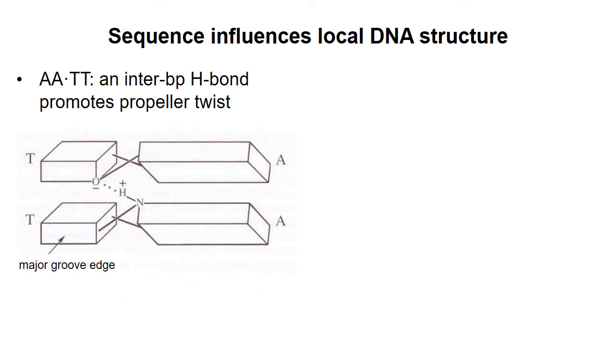The specific sequence of a dinucleotide can influence how much propeller twist happens. For example, in the AATT dinucleotide, it is possible for a hydrogen bond to form between adenine of one base pair and the thymine of the next base pair. This hydrogen bond is made stronger if propeller twist is larger than usual, so you will generally see more propeller twist in AATT dinucleotides than in other combinations.